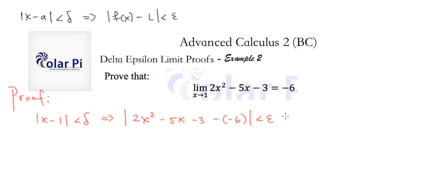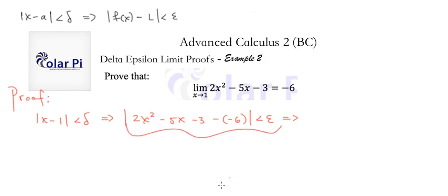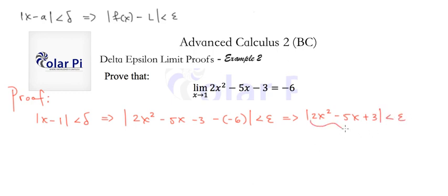We start here and create a relationship between delta and epsilon by manipulating the expression. So the condition |2x² - 5x - 3 - (-6)| < ε is the same as |2x² - 5x + 3| < ε. In the next step we factor, getting |2x - 3||x - 1| < ε.